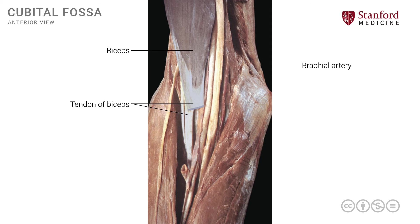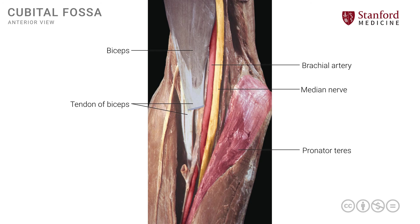One of the key structures in the cubital fossa is the brachial artery, running down into the cubital fossa on the medial side of the biceps tendon — exactly the same relationship one would find when palpating the cubital fossa in a patient. On the medial side of the brachial artery is the median nerve. To complete the picture of the cubital fossa, the pronator teres, shaded in red, forms the medial boundary, while the brachioradialis on the lateral side forms the lateral boundary. The two muscles overlap and come close to each other at the inferior angle of the cubital fossa.